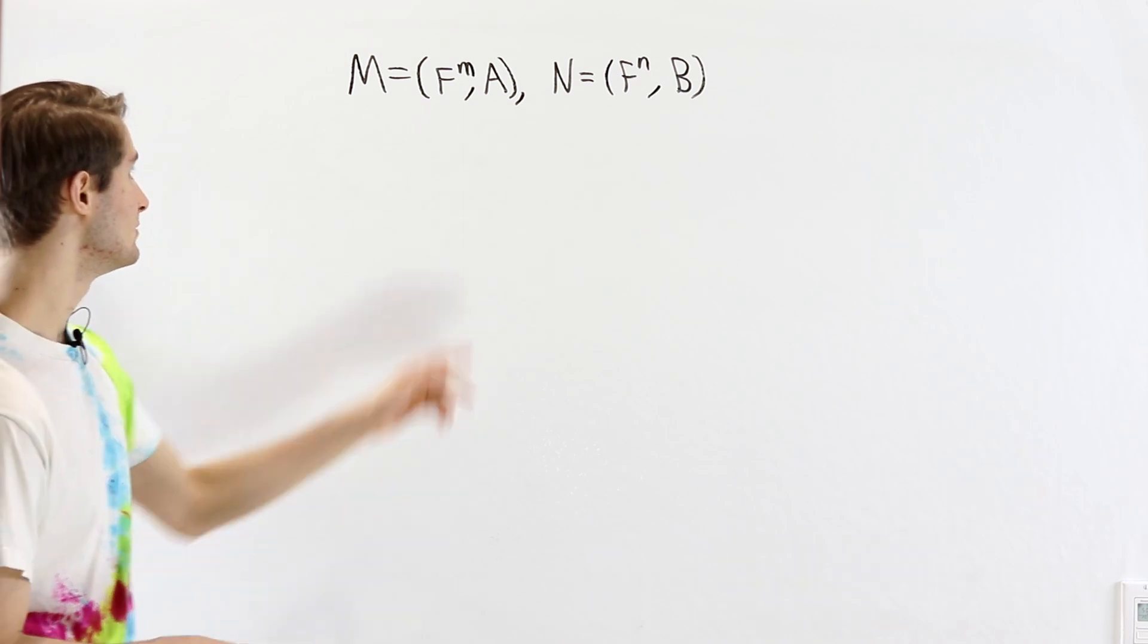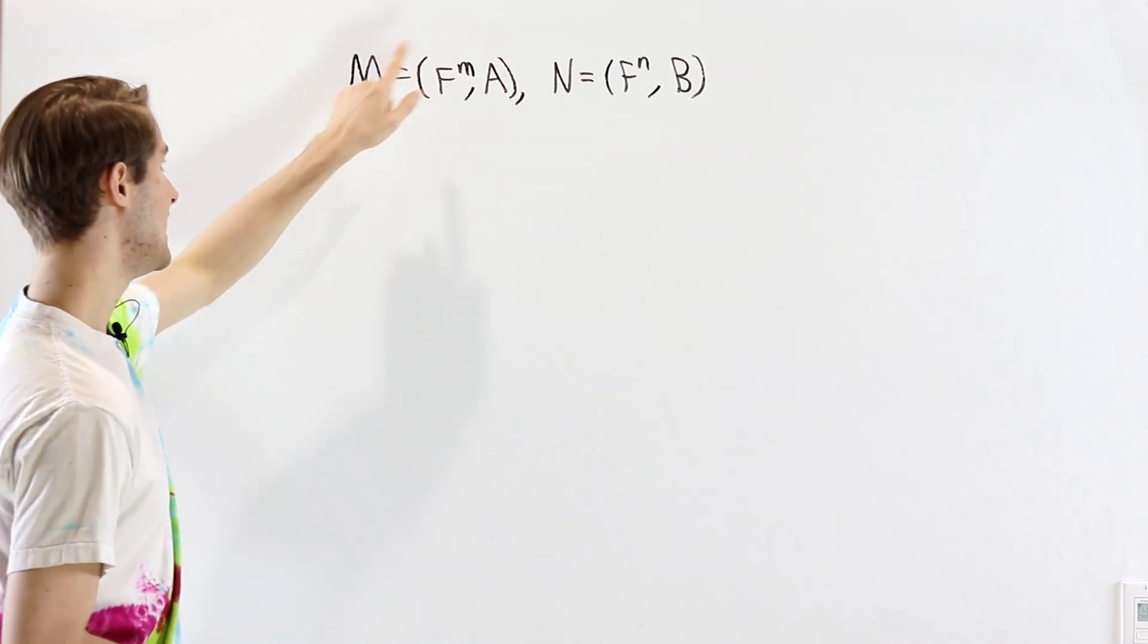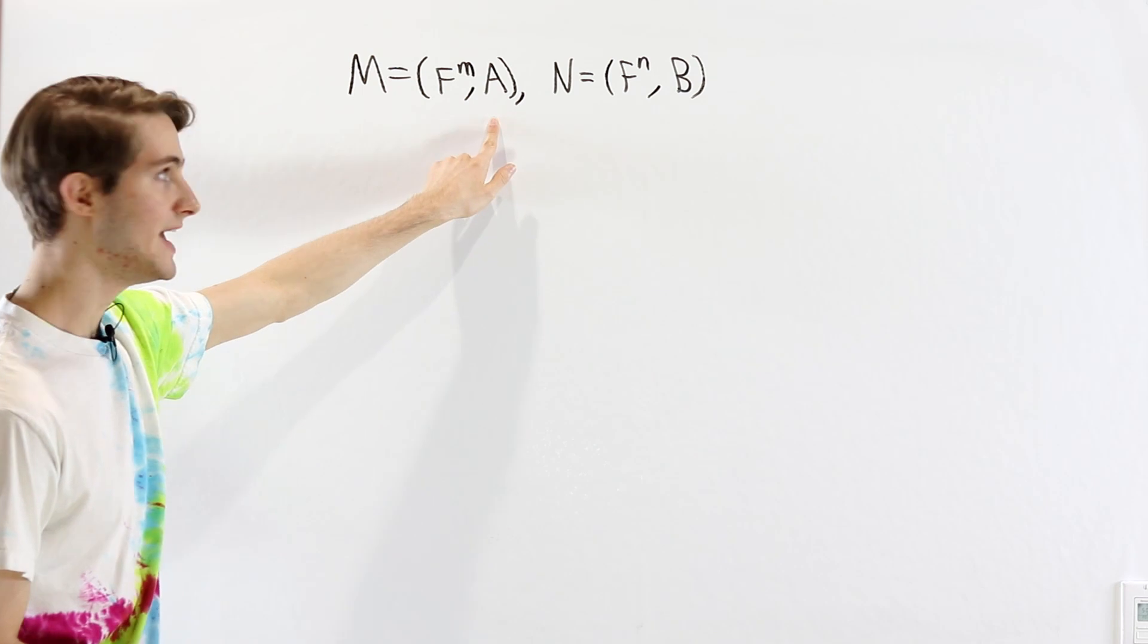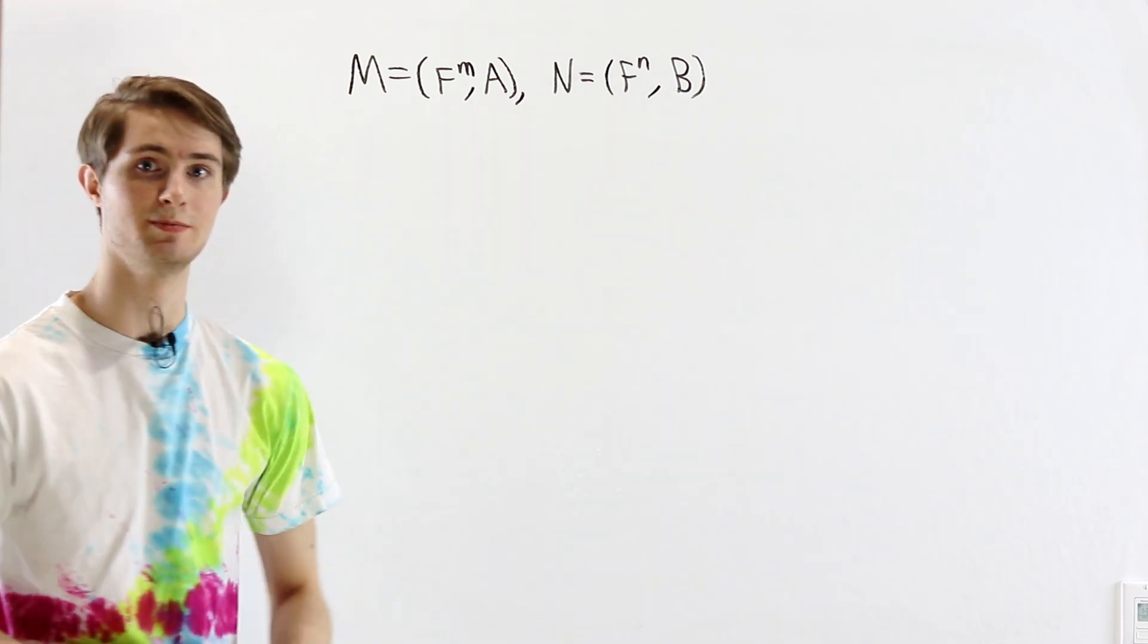Multiplication by x is given by some matrix. So in M, multiplication by x is described by the matrix A, and over here it's described by B.